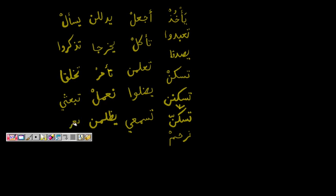يَغُرُّ — or يَغِرُّ — means to deceive; يَغُرُّ is more common. The majzoom forms can be يَغُرَّ, يَغُرِّ, or with no change يَغُرُّ, or also يَغُرَّ. The most common forms you will see are either يَغُرُّ or يَغُرَّ with a fatha instead of a dhamma.